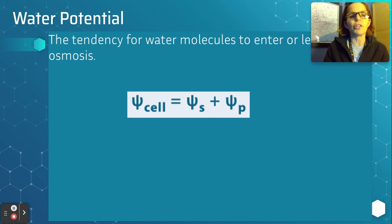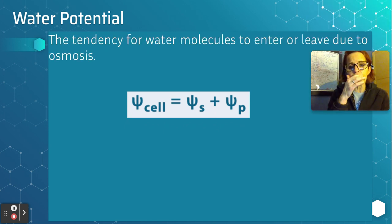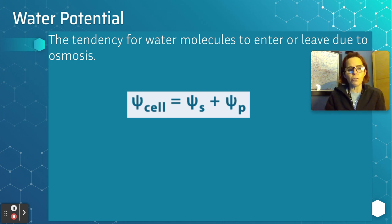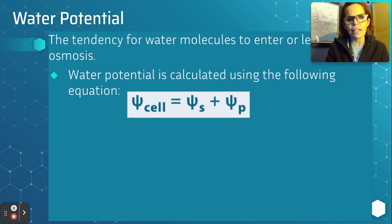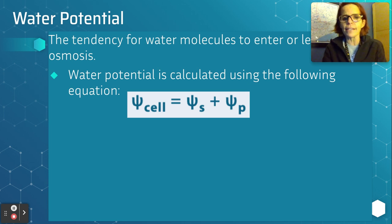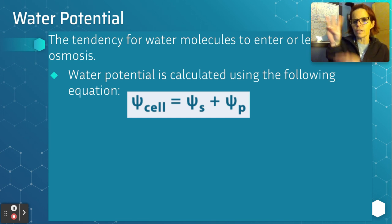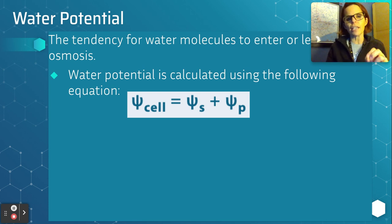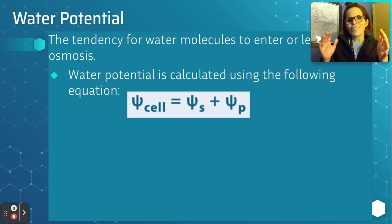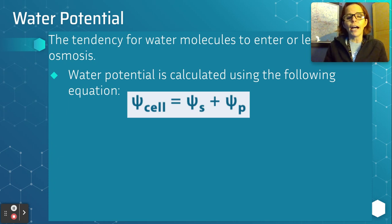Water potential is the tendency for water molecules to enter or leave due to osmosis. The water potential is calculated with the Greek letter psi (spelled P-S-I). The equation: the water potential of the cell equals the solute potential plus the pressure potential. The pressure potential is like the cell wall pushing on it and exerting pressure to the inside. The solute potential has to do with the interference of solutes with how water is moving.